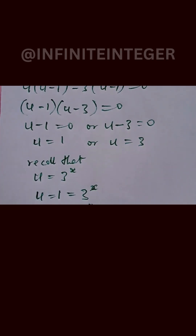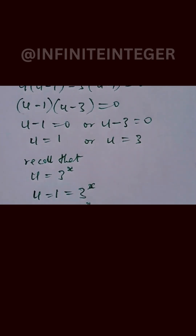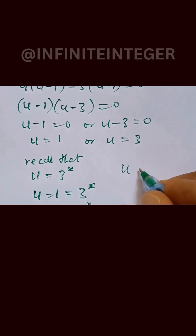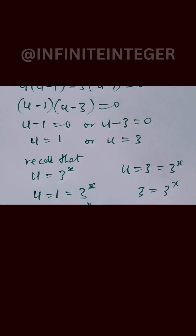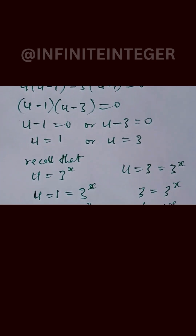This can be written as 3 raised to power 0 equals 3 raised to power x, so x equals 0. For u equals 3, we have 3 equals 3 raised to power x, which is 3 raised to power 1 equals 3 raised to power x, giving us x equals 1.